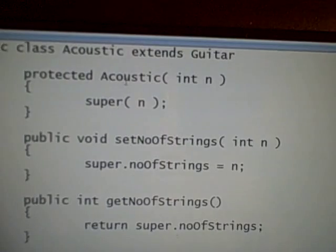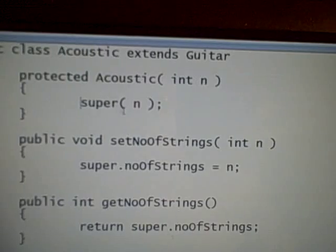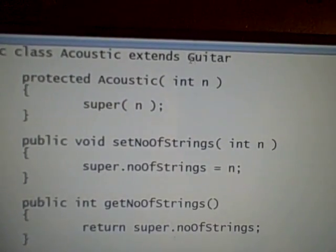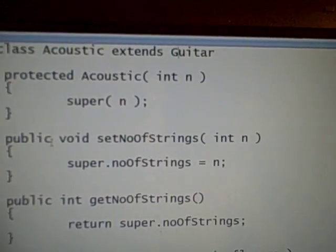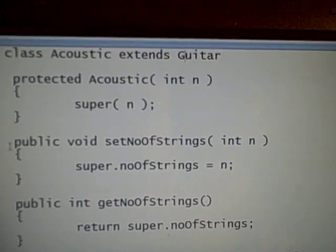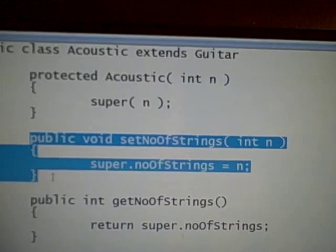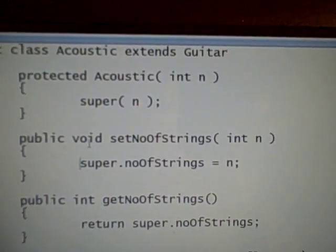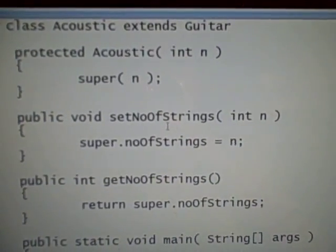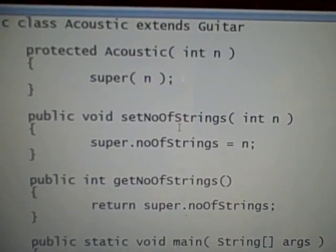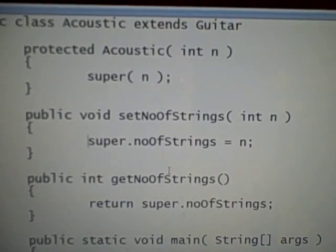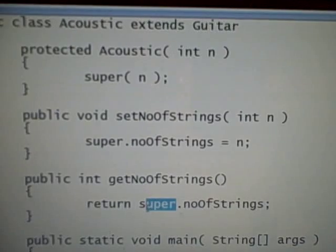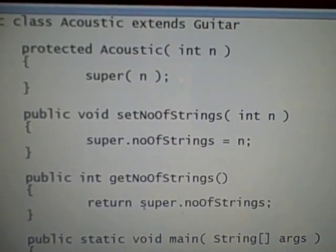So that's what we've done over here. Acoustic, giving it the parameter, and super is the keyword that we've used to refer to our abstract class Guitar. Then we are going to do what is most important for our subclass Acoustic. We're going to go ahead and implement or define the methods set number of strings and get number of strings in this class. And again, you can see we have used super to refer to our parent class Guitar.